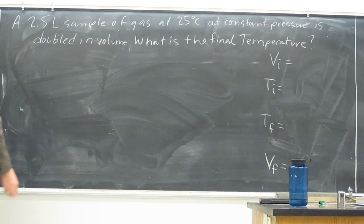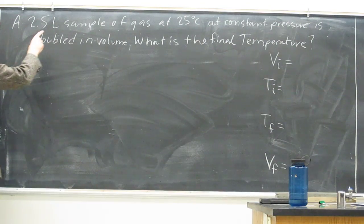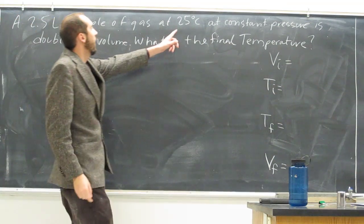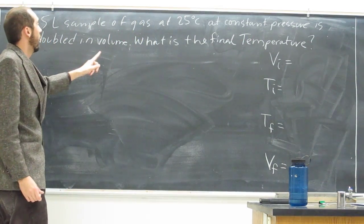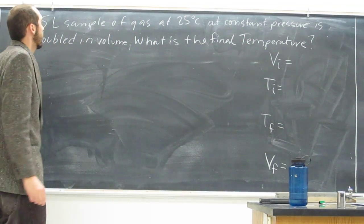So this problem says a 2.5 liter sample of gas at 25 degrees Celsius at constant pressure is doubled in volume. What is the final temperature?